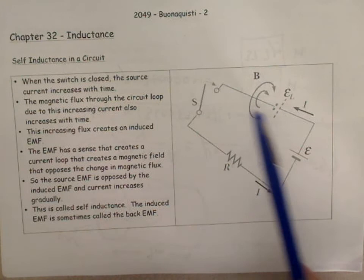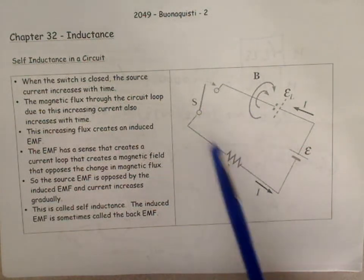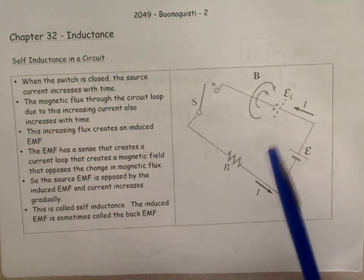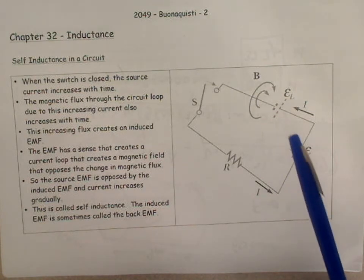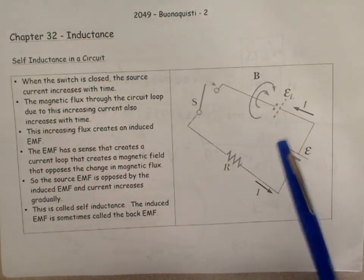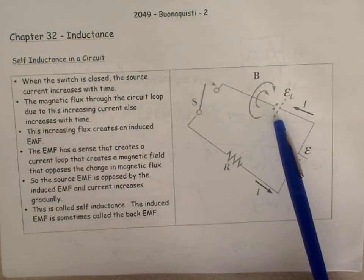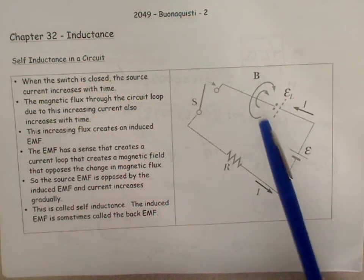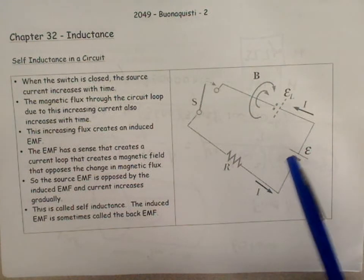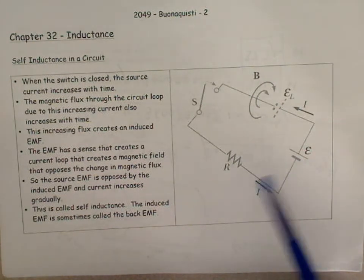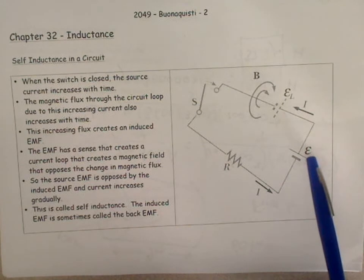That increasing number of flux lines going through the center of the circuit, by virtue of Lenz's law, induces a back EMF that creates an electric field to oppose the increasing number of flux lines. We get this classic development of the back EMF which opposes the original EMF.